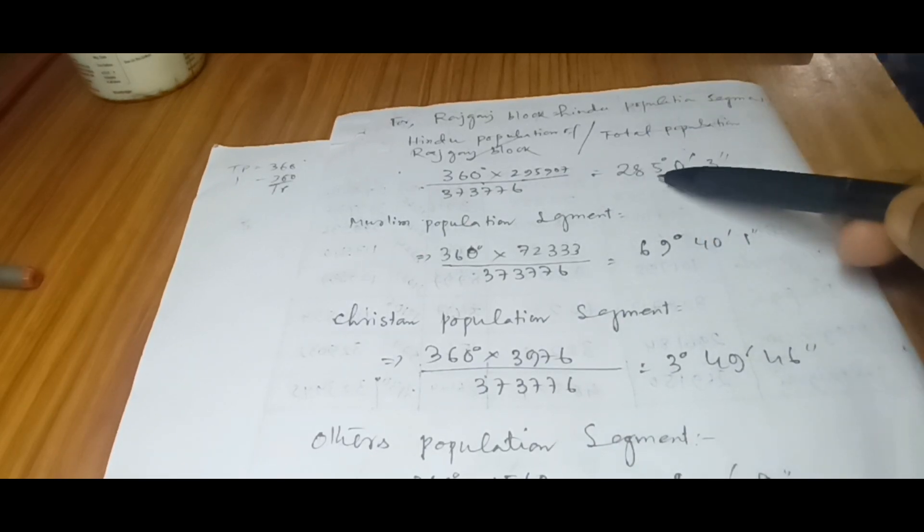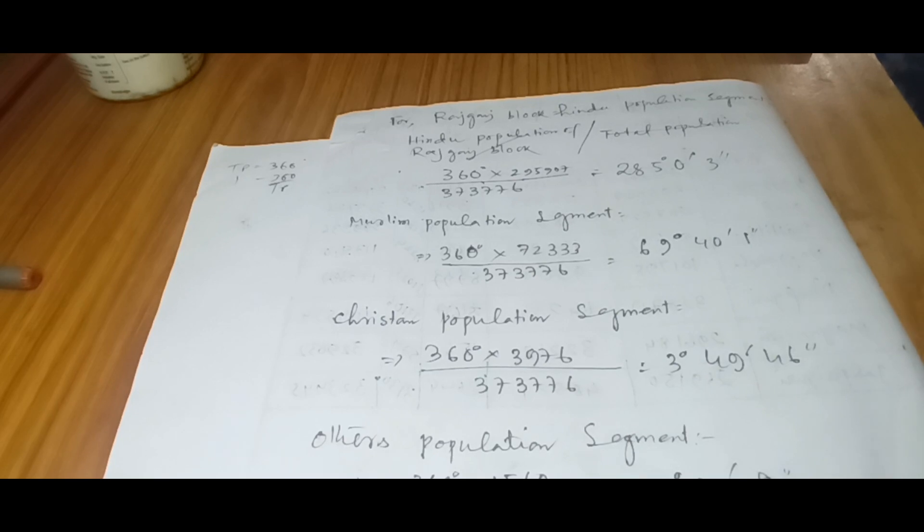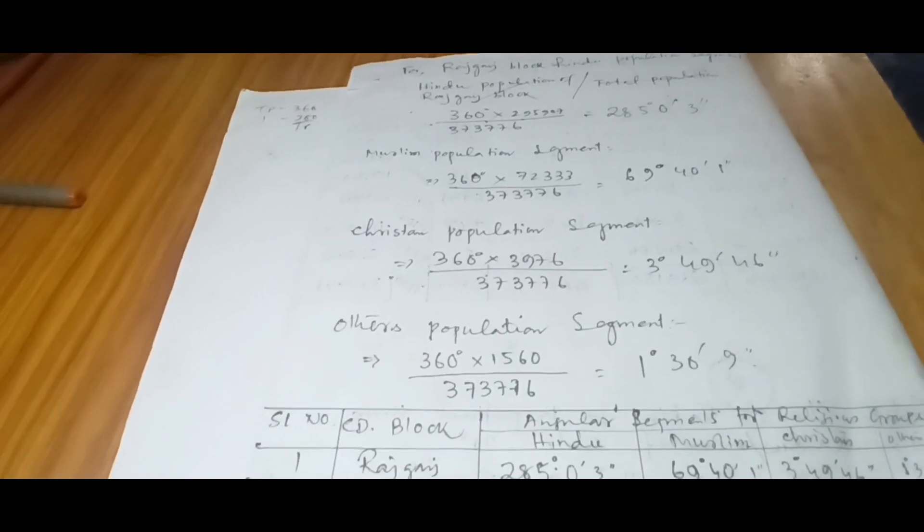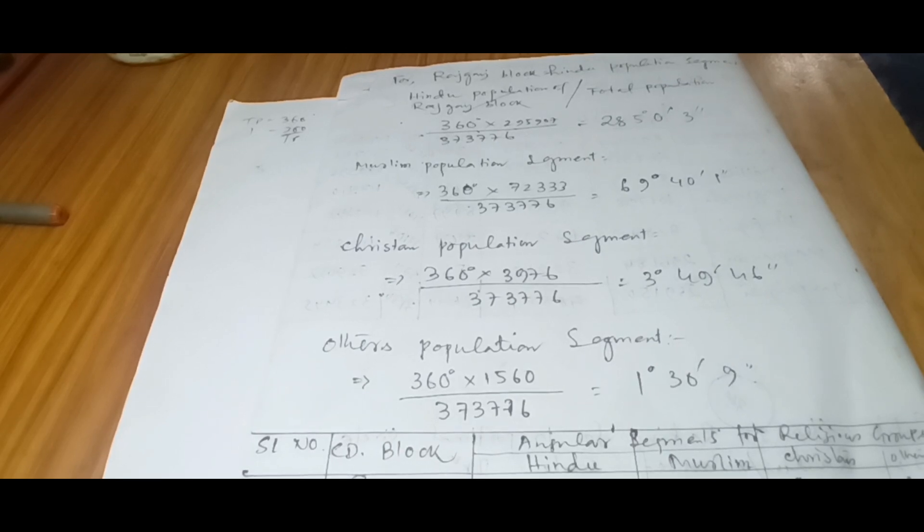So this is the way: 360 × that particular block population divided by total population. Then that will help us get the different angles. Let me show you. This is the first Rajganj block, and for Hindu population the calculation has been done: 285° 0' 3". For Muslim population, the calculated value: 69° 40' 1". For Christian population: 3° 49' 46". And for other population: 1° 30' 9".